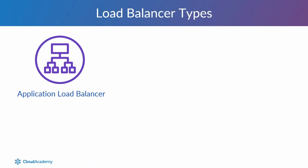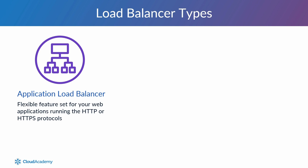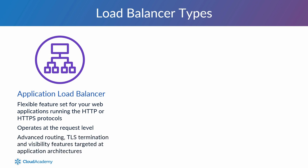Firstly, the Application Load Balancer. This provides a flexible feature set for your web applications running on the HTTP or HTTPS protocols. The Application Load Balancer operates at the request level and it also provides advanced routing, TLS termination and visibility features targeted at application architectures, allowing you to route traffic to different ports on the same EC2 instance.